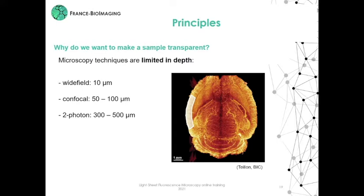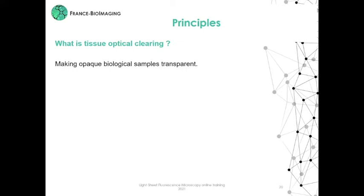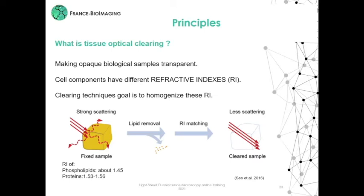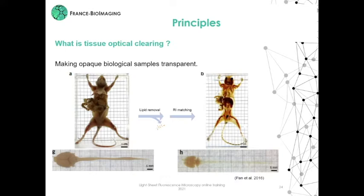In practice, what is tissue optical clearing? It's making opaque biological samples transparent. We know that cell components have different refractive indexes, and the aim of these techniques is to homogenize this array. Light scattering in biological tissue can be reduced by removal of lipids and refractive index matching, achieving less scattering in clear samples. Here is an example of an entire cleared mouse and an entire brain with the spinal cord.